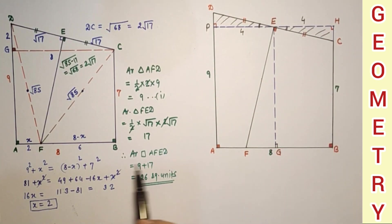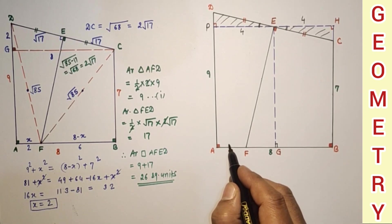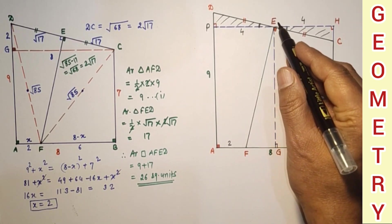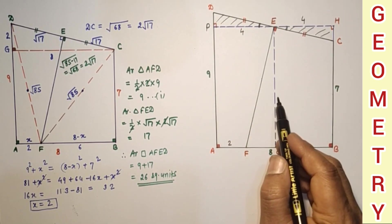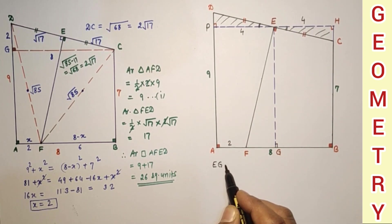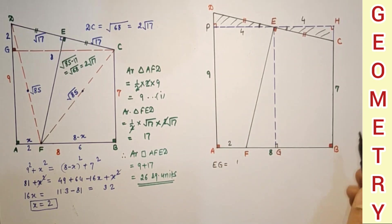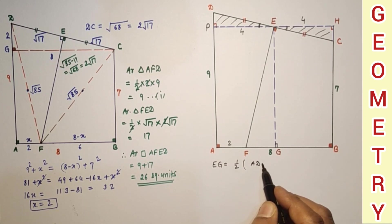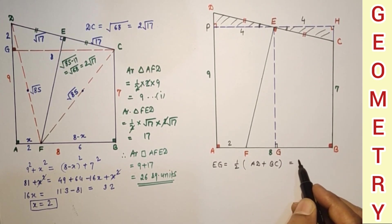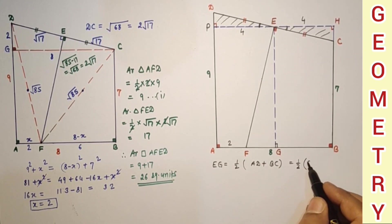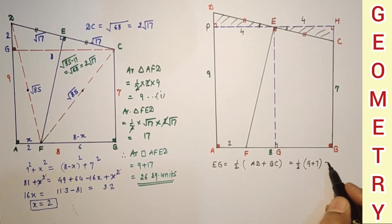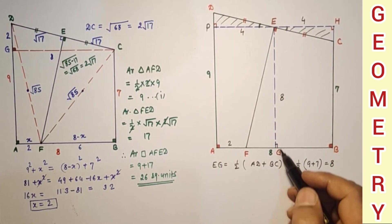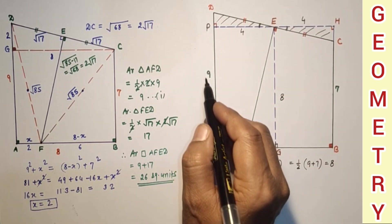We already found AF = 2. Since EG is a midline, EG = ½(AD + BC) = ½(9 + 7) = 8. So EG = 8, which means AP = 8 and PD = 9 − 8 = 1.